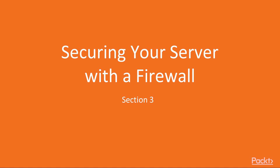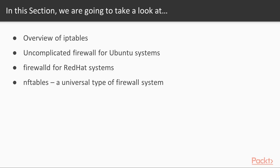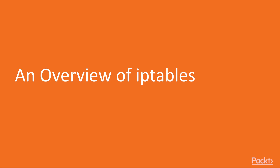Hi everyone, welcome to the new section: securing your server with a firewall. In this section we'll start with an overview of IP tables, then look at Uncomplicated Firewall for Ubuntu systems, firewalld for Red Hat systems, then we'll work with nftables, a more universal type of firewall system. Now we move on to the first video of this section, which deals with an overview of IP tables.